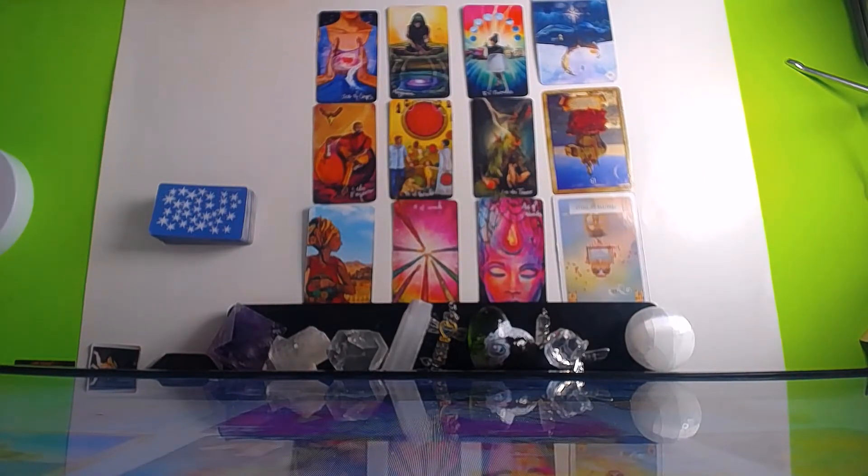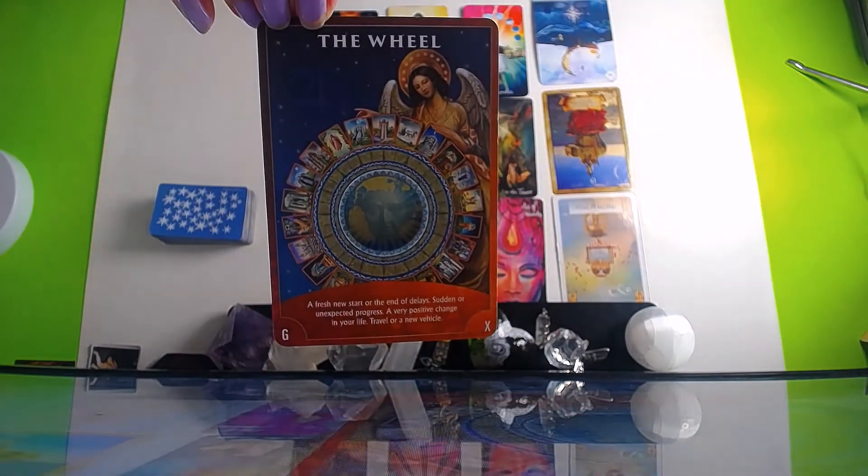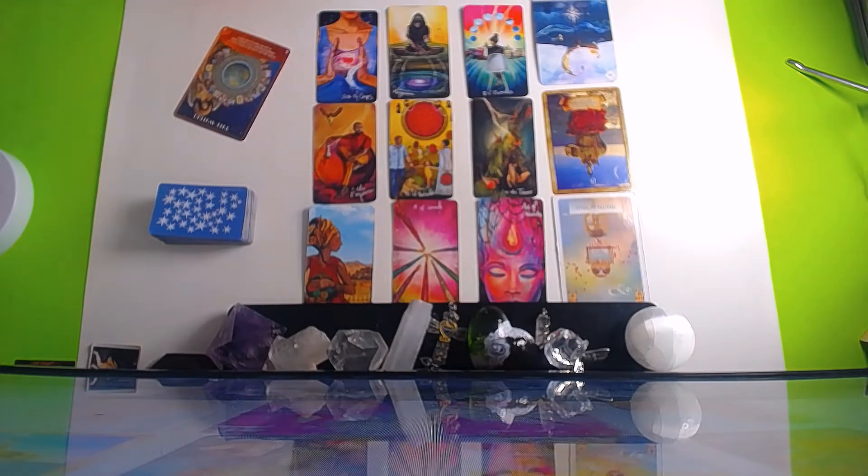We start off with an all-over energy card, and it's beautiful - the Wheel, known as the Wheel of Fortune. The Wheel of Fortune speaks about a brand new start. Delays are going to be over, you're moving forward, being propelled in a direction forward now. It's indicative of a change of luck. Given its astrological association with the planet Jupiter, it's usually a change for the good. You're going to notice synchronicities now and old blocks that are going to be lifted.